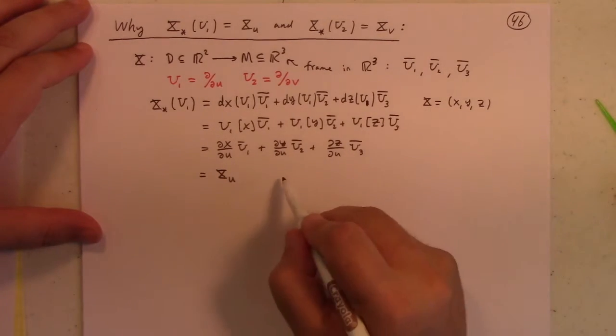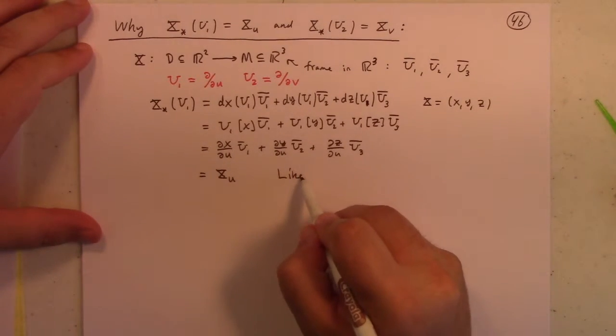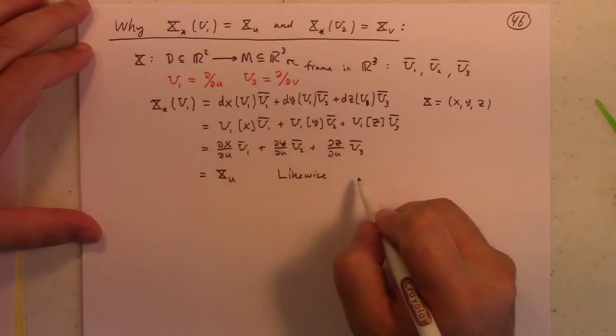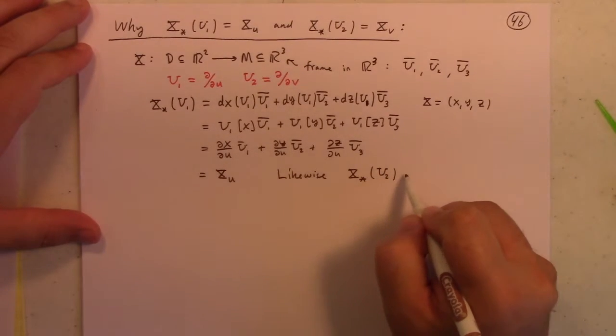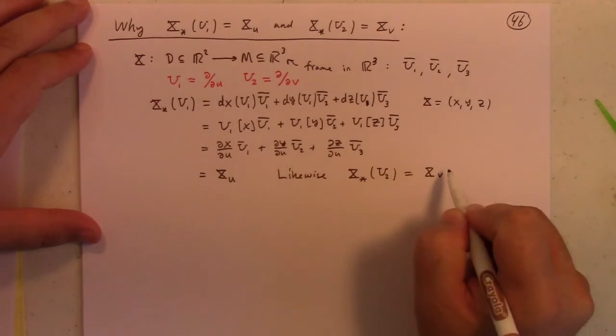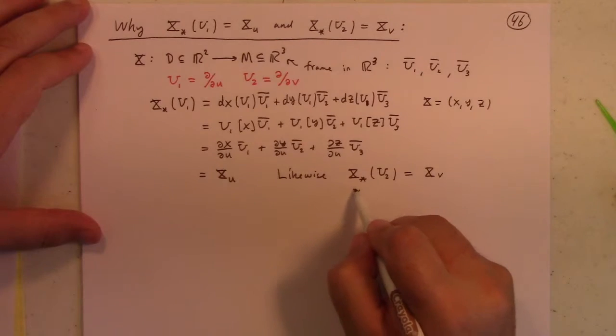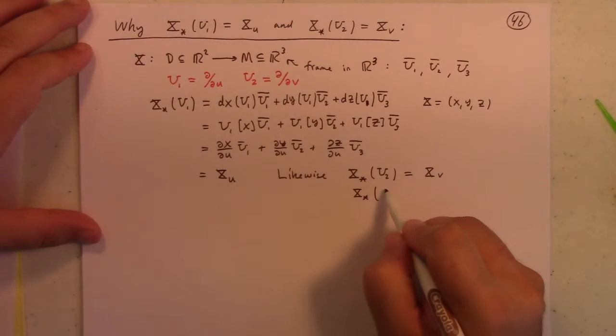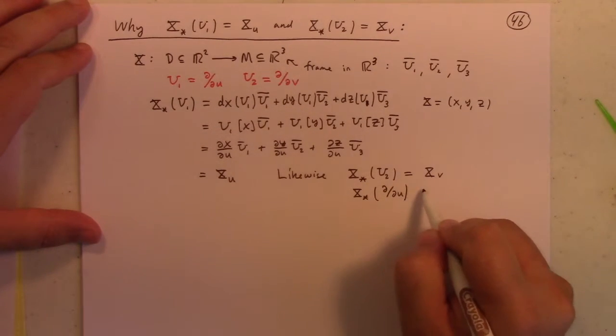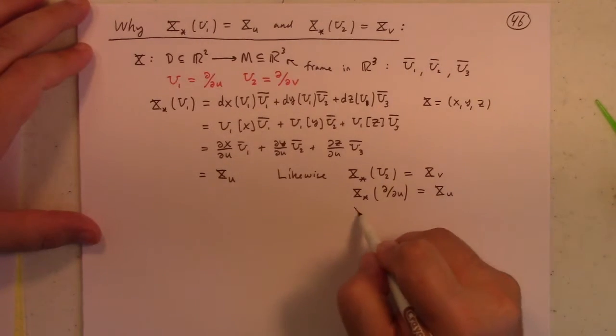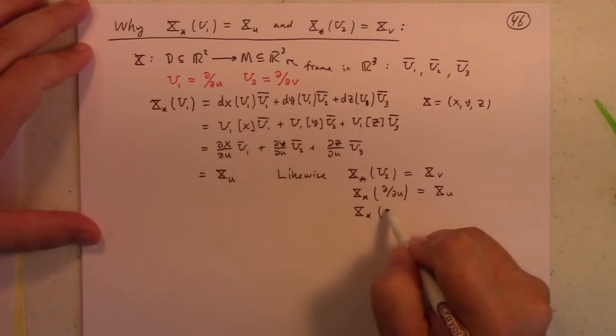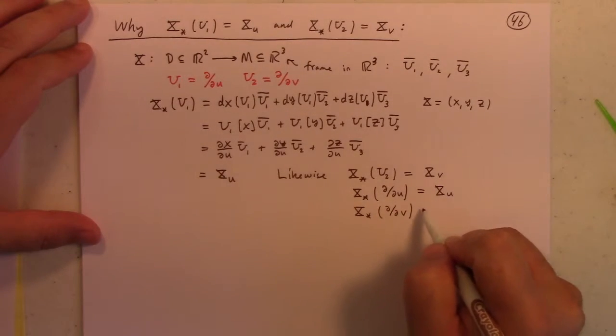And then likewise, almost the same calculation shows you that the push forward of U2 is equal to Xv. But maybe it's even more instructive to look at this as the push forward of partial partial U is XU, and the push forward of partial partial V is Xv.